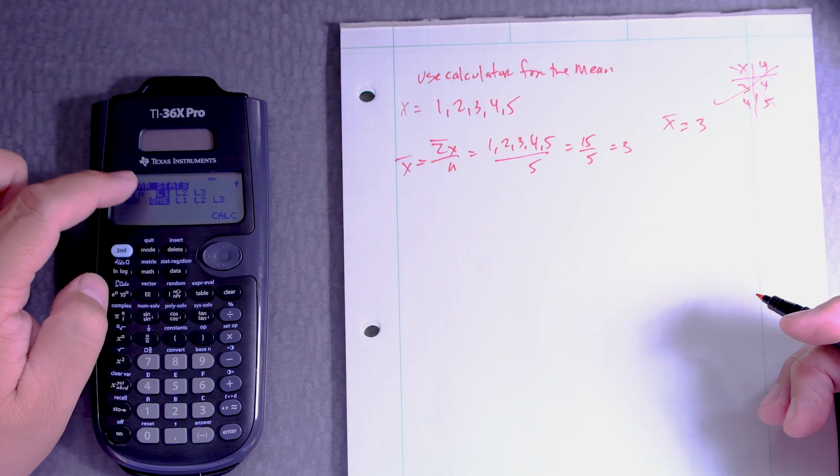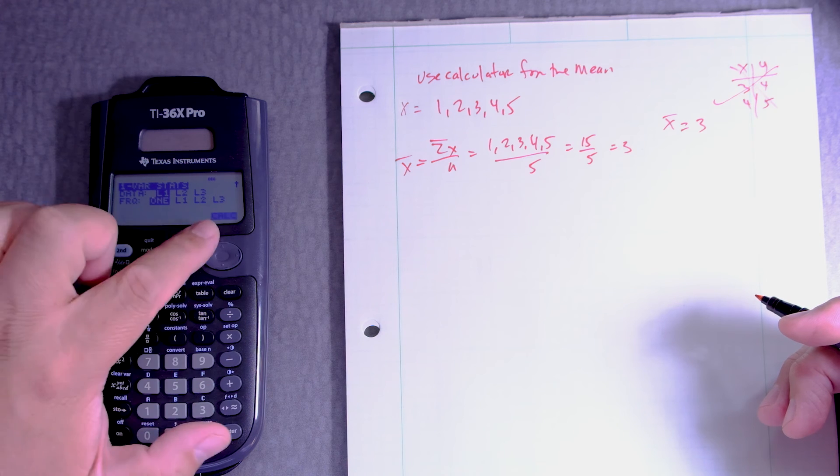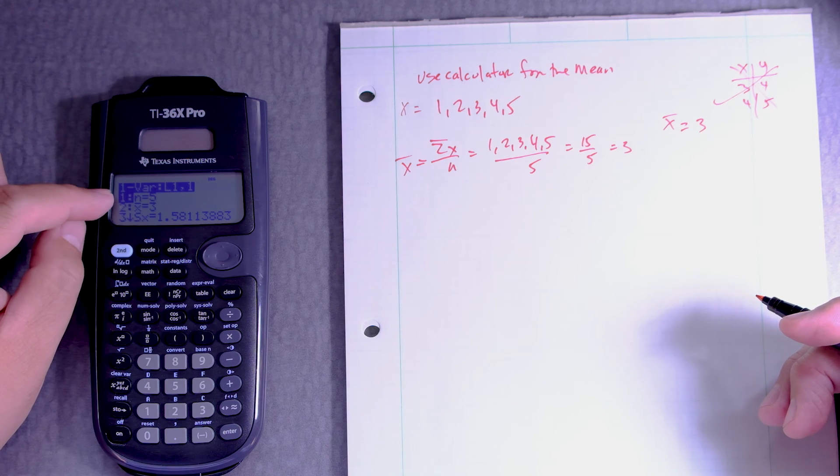Okay, so L1, first list one, and then calc. We can scroll down. Enter. Now it's going to give us some information.